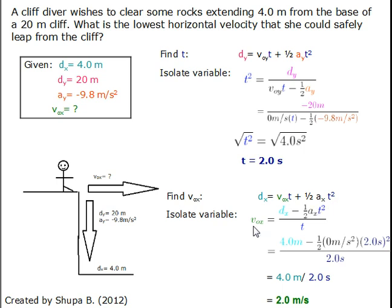Once again, we will isolate for vox, substitute our values in, and we will come out with the equation 4.0 meters divided by 2.0 seconds.